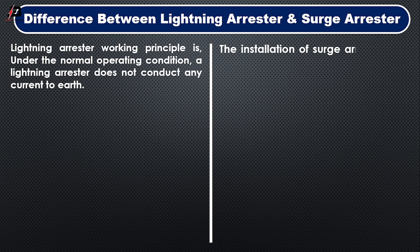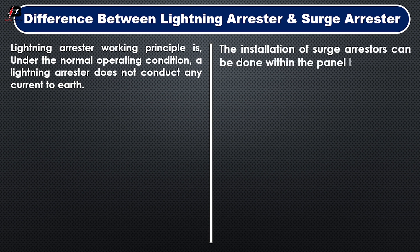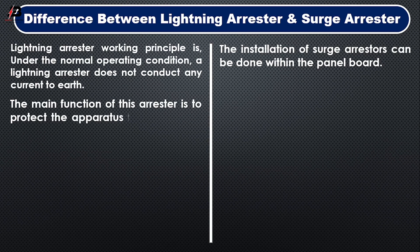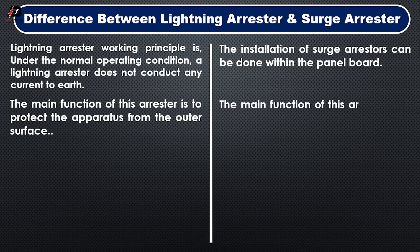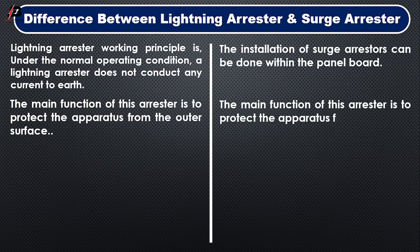The installation of a surge arrester can be done within the panel board. The main function of this arrester is to protect the aperture from the outer surface. Note that in this diagram, the left side is the lightning arrester and the right side is the surge arrester.